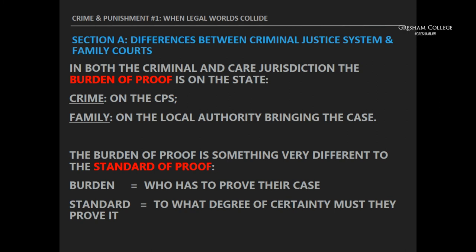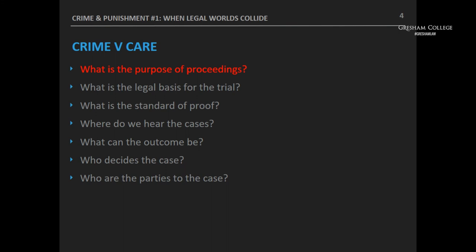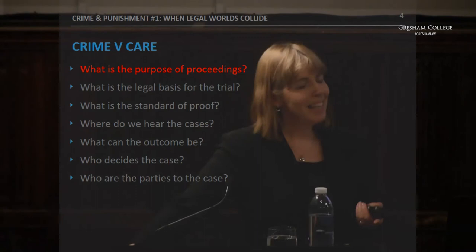Looking at why we have criminal proceedings versus care proceedings: they have very different purposes. The purpose of criminal proceedings is to punish somebody — by imprisonment, fines, or community sentences — and to deter them and others from doing the same thing. In care proceedings the purpose is entirely different: to protect a child who's been injured, or to protect a sibling or another child who might be injured.